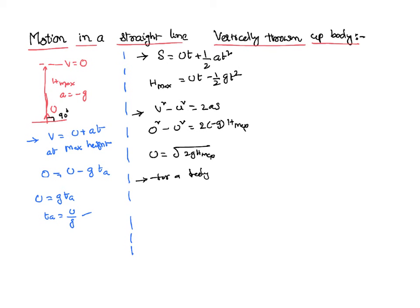For a freely falling body, you got an equation v equal to root 2gh. What we can say? v and u are equal in magnitude, but of course, opposite in direction. Because v is going up and u is coming down. Once if this v equal to u, you can say time of ascent equal to time of descent.